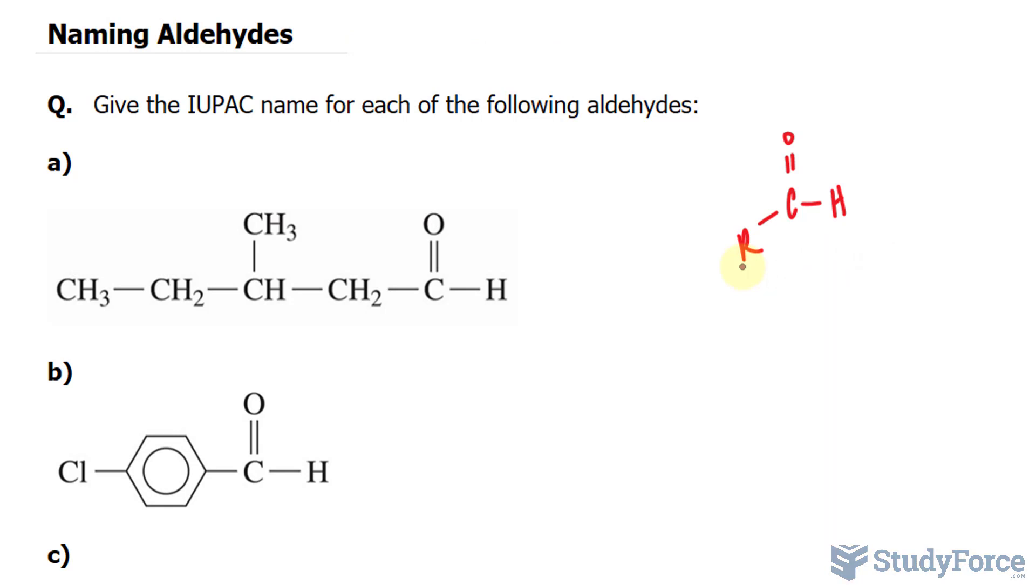We begin by naming the longest carbon chain that contains the double bonded oxygen. So we have 1, 2, 3, 4, 5 - 5 is the longest carbon chain.